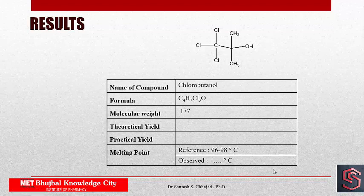Finally, report the result in this manner: structure, name of the compound, formula, molecular weight, theoretical yield, practical yield, and melting point. The reference melting point is 96 to 98 degrees Celsius, and the practically observed melting point should be recorded. Calculate the theoretical yield using the molecular masses of acetone and chlorbutanol, then calculate the percent practical yield from the obtained yield.